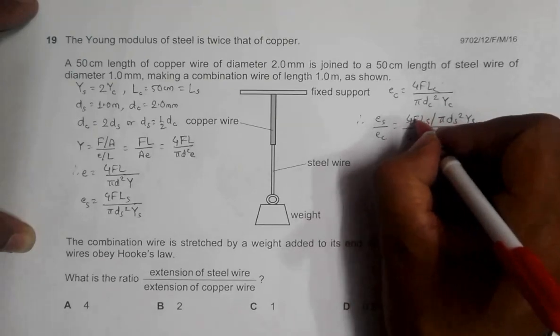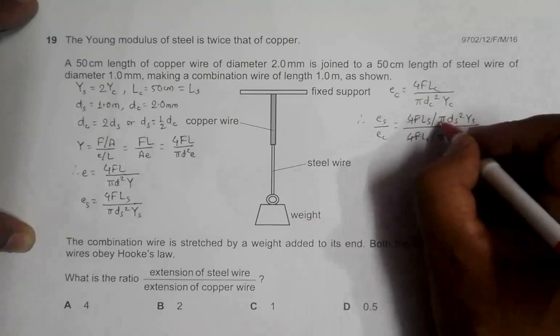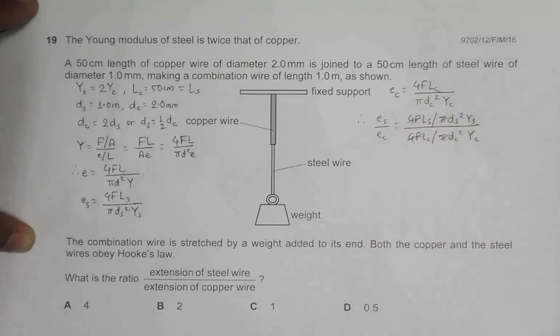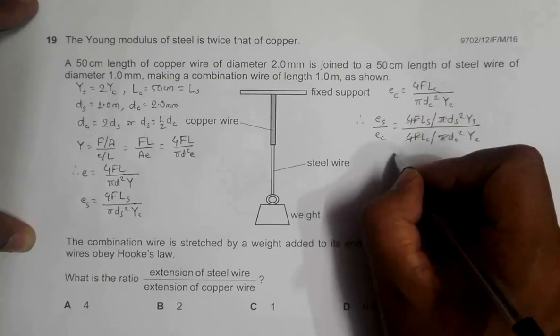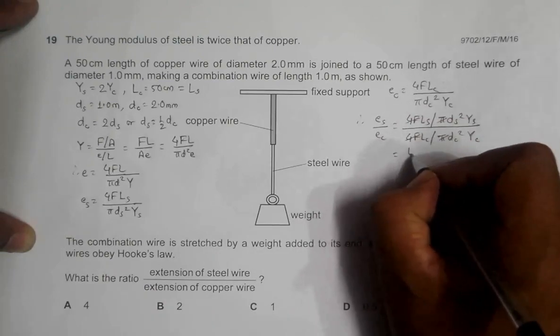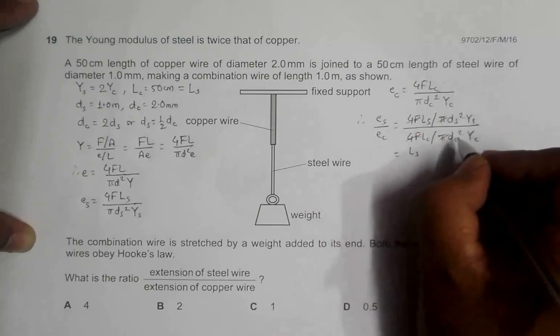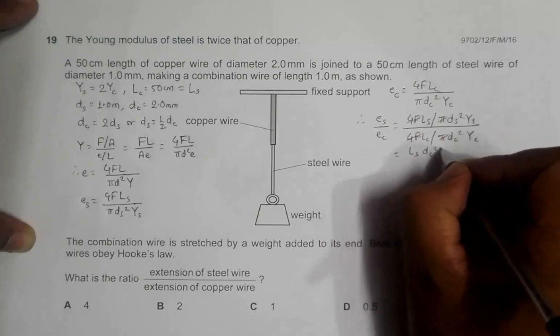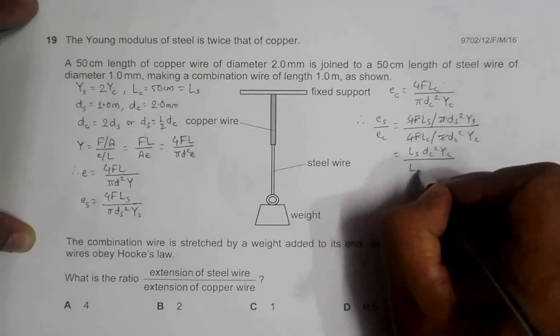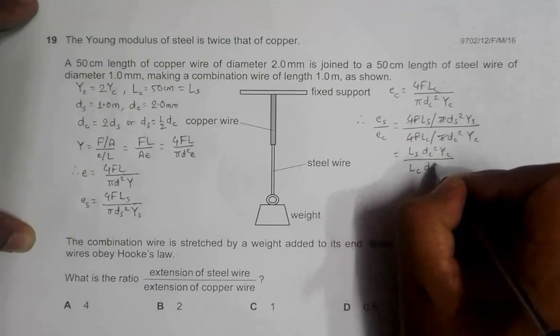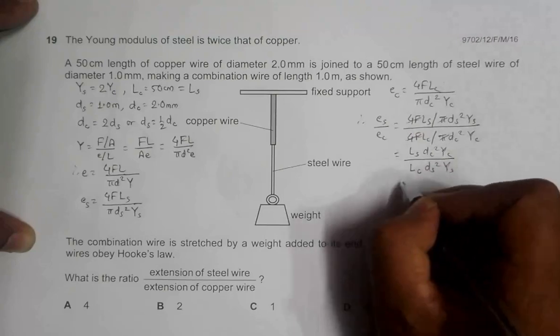I can cancel several things here. Let me cancel this 4F and F, pi and pi goes. So the ratio of everything that we have here is LS into DC square into YC divided by LC then DS square YS.